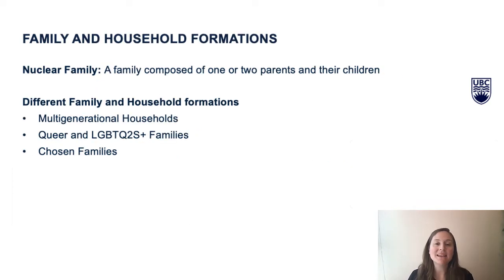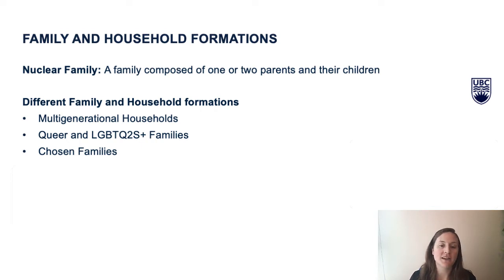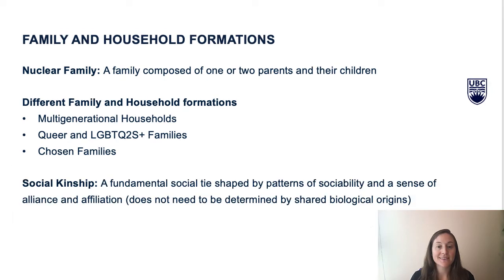Today, there are many different family and household formations beside the nuclear family. For instance, it's very common for individuals to live in multi-generational households. Likewise, some queer and LGBTQ2S+ families have parents who are in polyamorous relationships, and families are not always made up of individuals with shared biological descent. For example, chosen families are defined as non-biological kinship bonds, whether legally recognized or not, deliberately chosen for the purpose of mutual love and support.